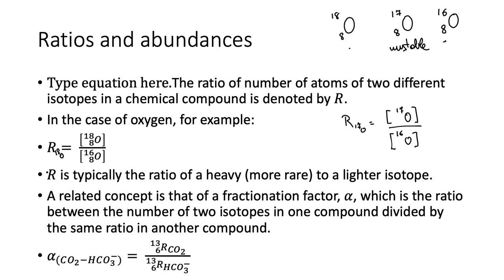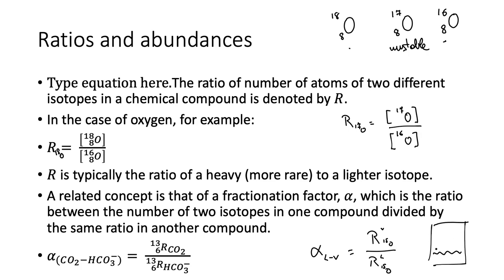Another important concept is the fractionation factor: the ratio between the isotope ratio in one compound divided by the same ratio in another compound. For example, with water isotopes you could compute the fractionation factor as the ratio of oxygen-18 in vapor over the ratio of oxygen-18 in the liquid phase. If you have a tank with liquid water and air above it, the vapor will contain some oxygen-18 isotopes and the liquid water will also contain oxygen-18. The ratio of isotope ratios in the two phases is one example of a fractionation factor.